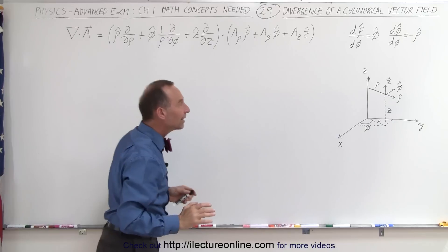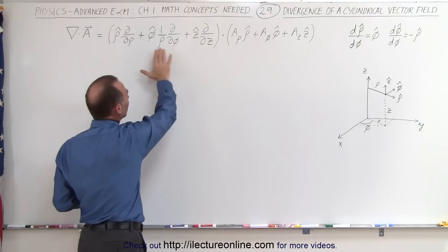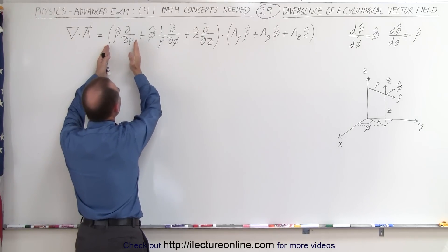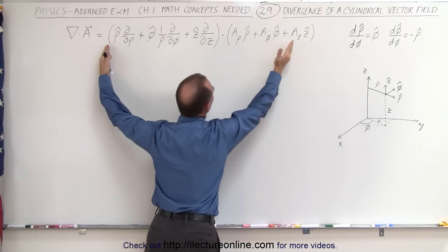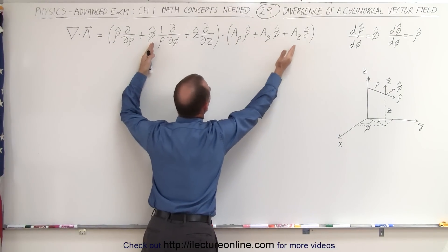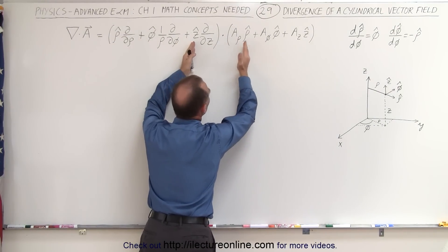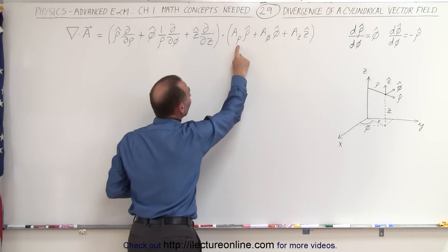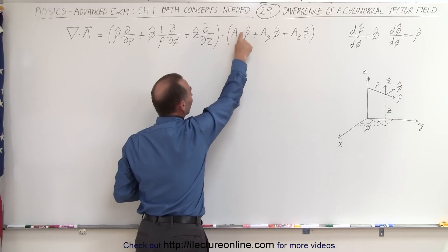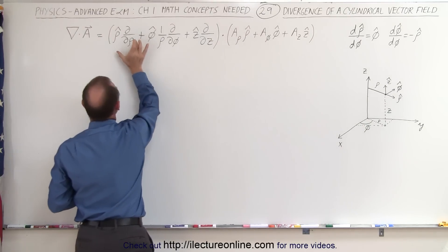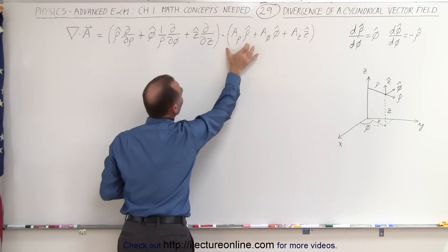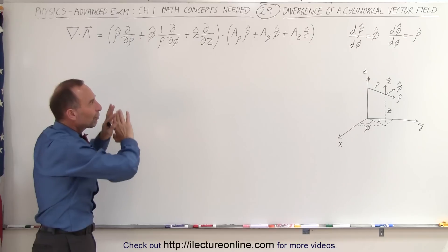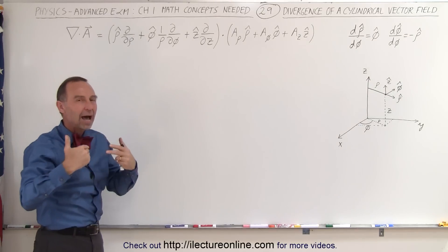Now to take the divergence, we apply each of the three del operator terms to each of the three vector components. Notice that the rho coordinate times the rho unit vector is a product, so when we take the partial derivative of that we have to use the product rule. I'm going to work through a few of these before doing the whole thing.